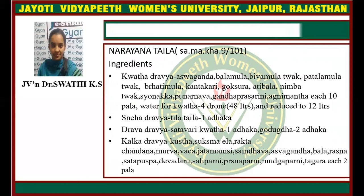Harayana Taila from Sharangadhara Madhyama Khanda. Kvatha Dravyas: Ashwagandha, Bala Moola, Bilva Moolatvak, Patala Moolatvak, Brihati Moola, Kantakari, Gokshura, Atibala, Nimba Tvak, Shonaka, Punarnava, Gandha Prasarani, Agni Malta — each 10 Pala. Water for Kvatha: 4 Drona (48 liters), reduced to 12 liters. Sneha Dravya Tila Taila 1 Aadaka. Jala Dravya — Adha Dravya: Shatavari Kvatha 1 Aadaka, Godugdha 2 Aadaka. Kalka Dravyas: Kushtha, Sukshmaila, Rakta Chandana, Murva, Vacha, Jatamamsi, Saindhava Lavana, Ashwagandha, Bala, Rasna, Shatapushpa, Deva Daru, Shalaparni, Krishnaparni, Vikaparni, Tagara — each 2 Pala.